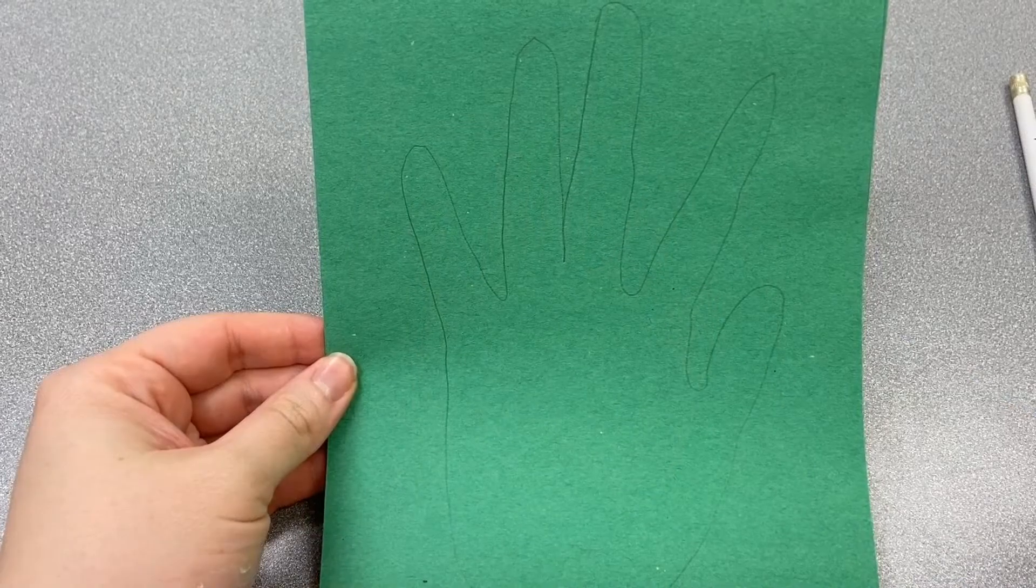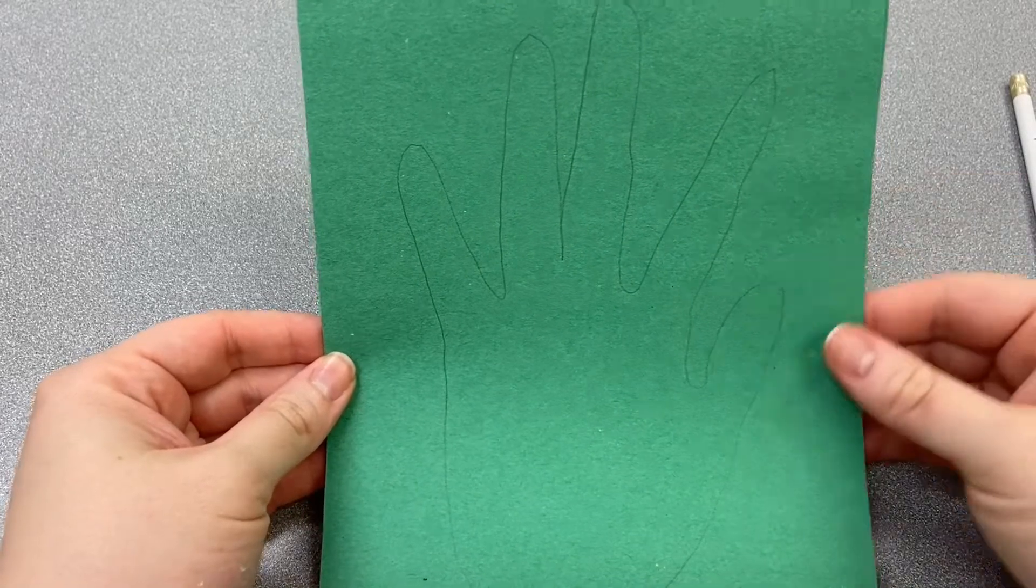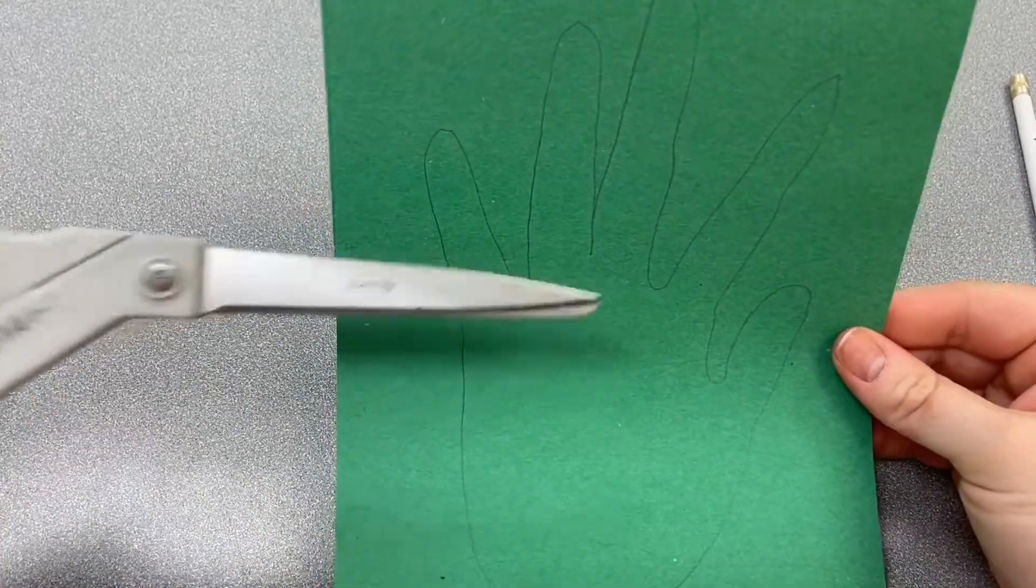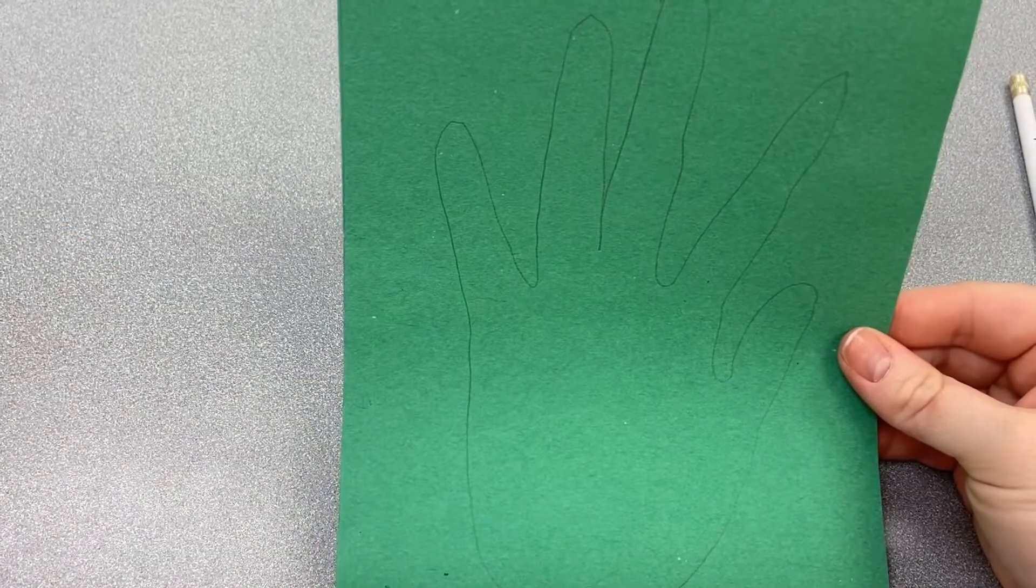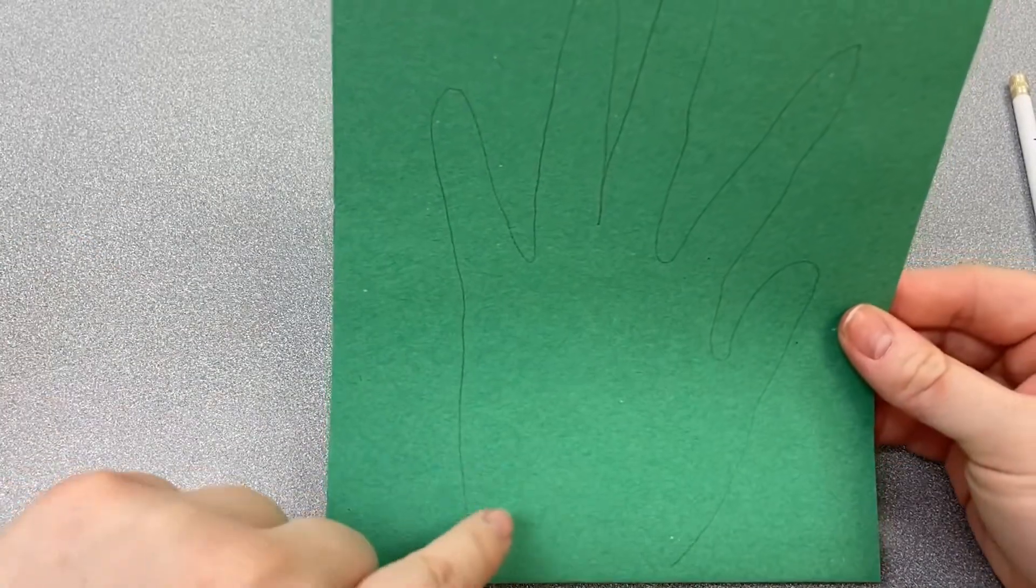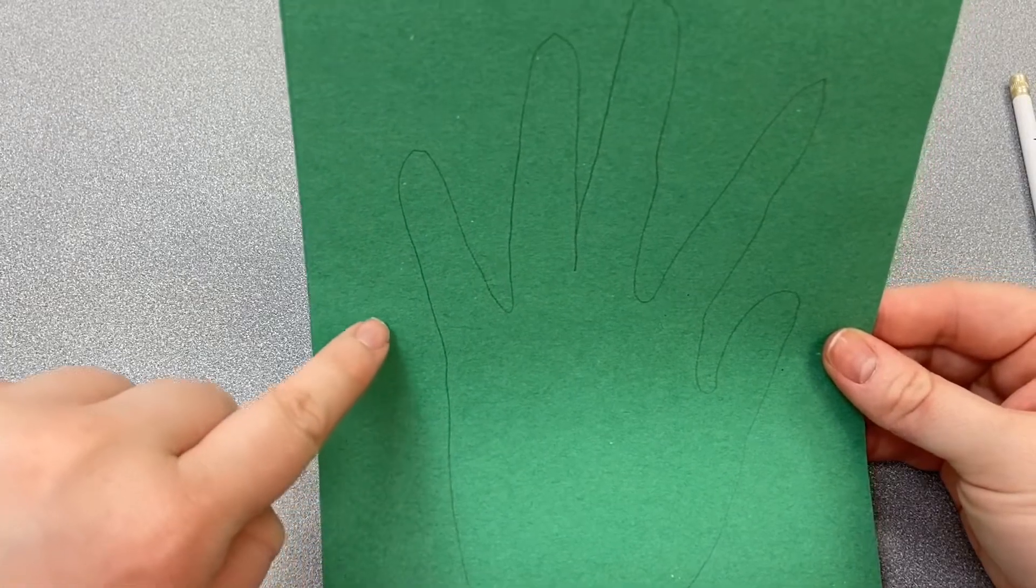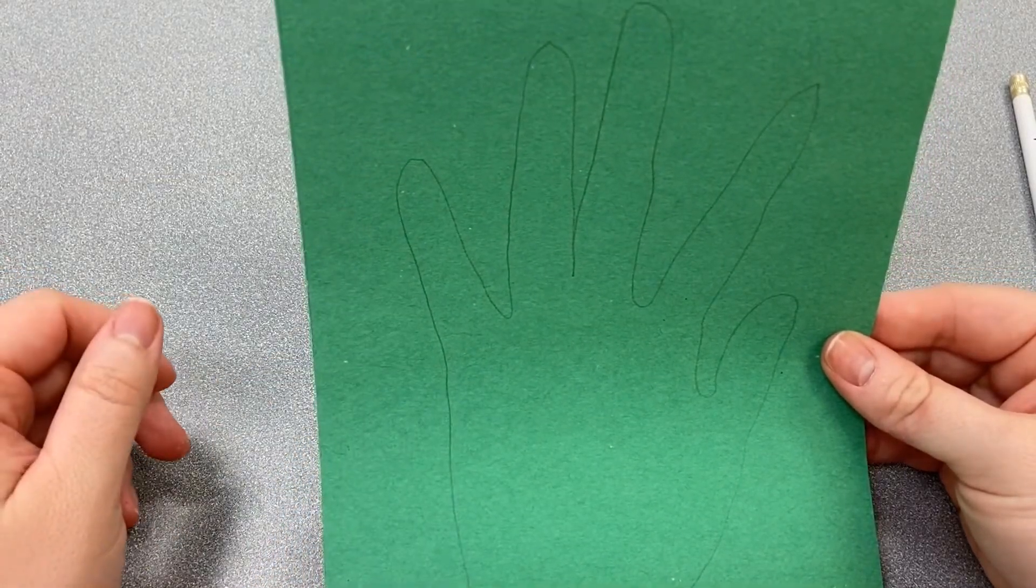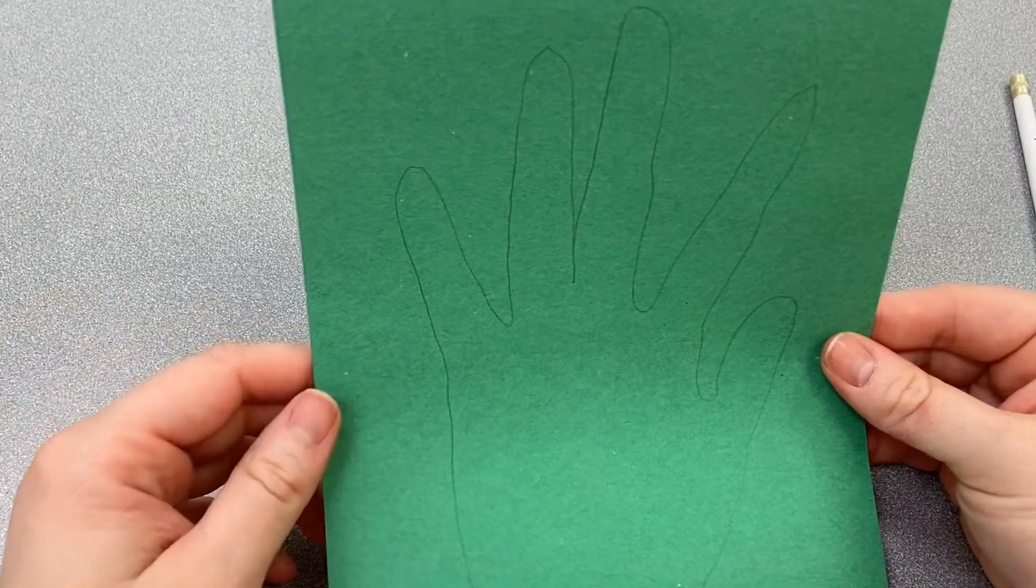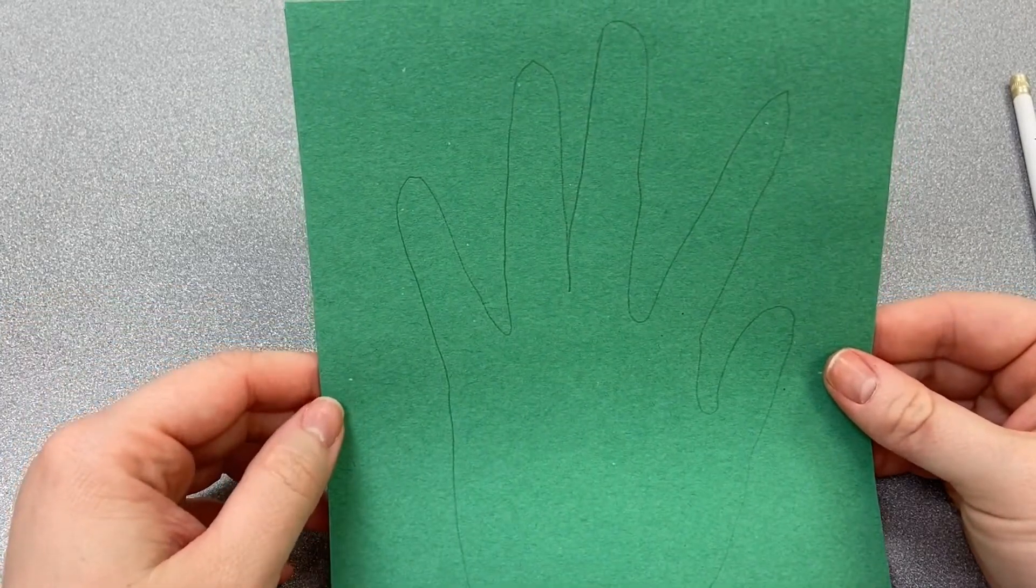Now that we've traced all the way around our hand, we're going to cut it with some scissors. Be sure to be careful when you're cutting around the fold because we're going to need it to make our turtle card. Be sure to have an adult help you to cut paper if you need help.